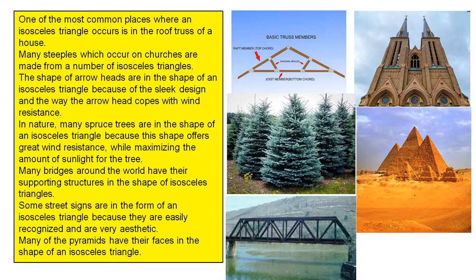The shape of arrowheads is in the shape of an isosceles triangle because of the sleek design and the way the arrowhead copes with wind resistance. In nature, many spruce trees are in the shape of an isosceles triangle because this shape offers great wind resistance while maximizing the amount of sunlight for the tree.